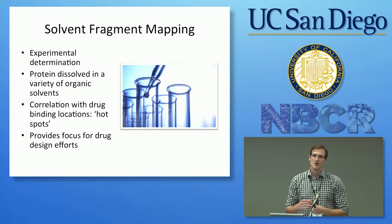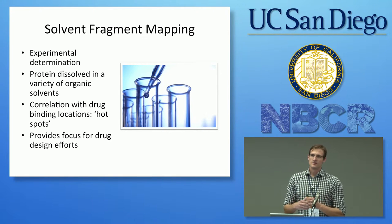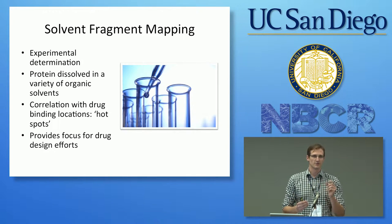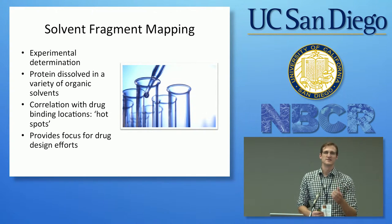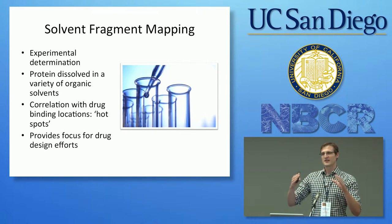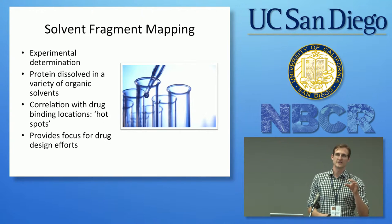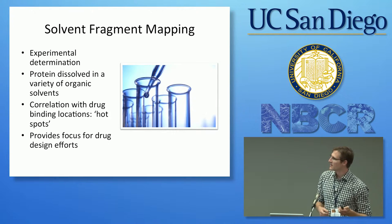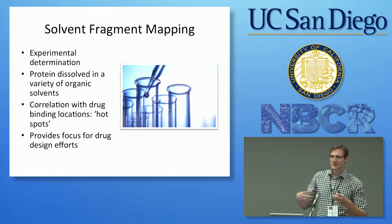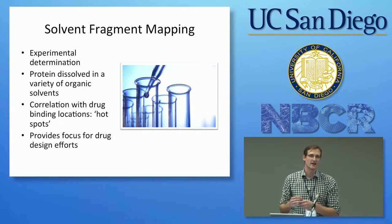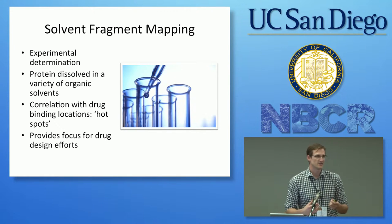I want to talk about this experimental method as background: solvent fragment mapping. You take a large number of small molecular solvent probes — things like benzene or methanol — that represent the chemical space of the functional groups you'd likely see binding in a biomolecular environment. Where these probes congregate on the surface of the biomolecule indicates where the hot spots are.